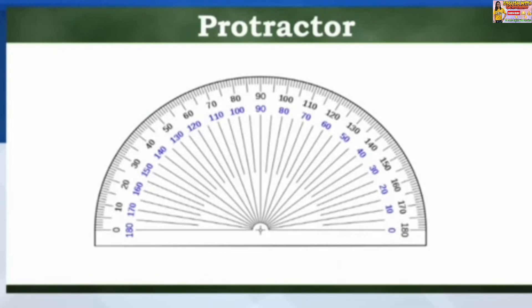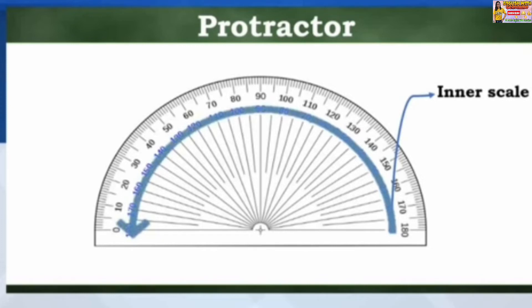And there are two scales of a protractor. The inner scale starts from 0 degrees to 180 degrees in clockwise direction, while the outer scale goes from 0 to 180 degrees from left to right.